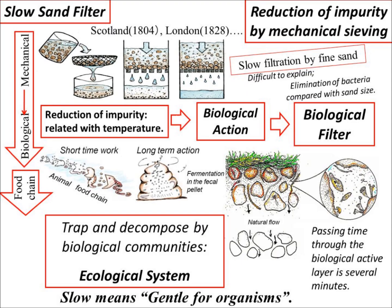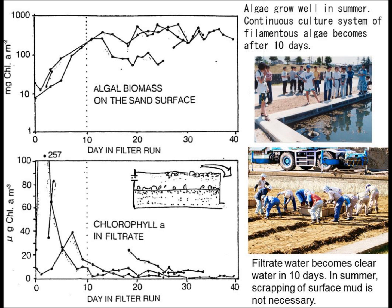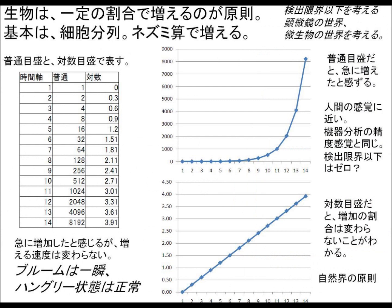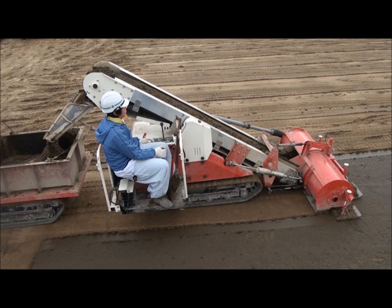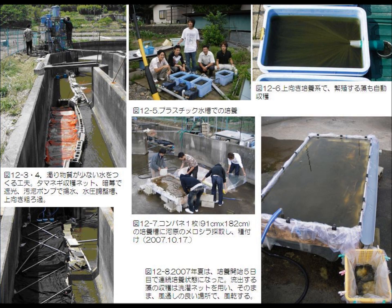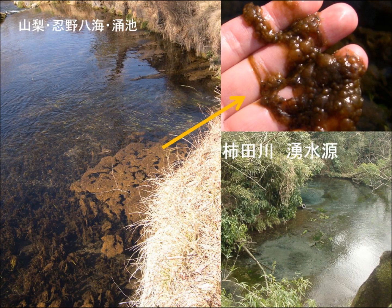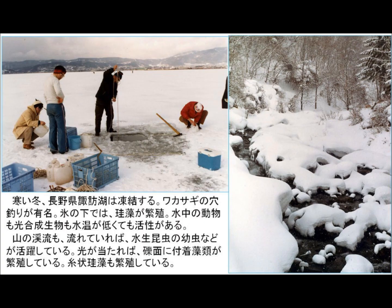Animals move around among the spaces of the sand layer. When there were abundant numbers of animals at the top of the sand layer, the filter did not clog and the filtrate became better quality. Sometimes the filter was clogged with muddy matter that flowed into the filter pond from the river. However, in the case of shallow water depths, algae and animals grow well and the filter does not easily clog. It is better to make shallow depths.